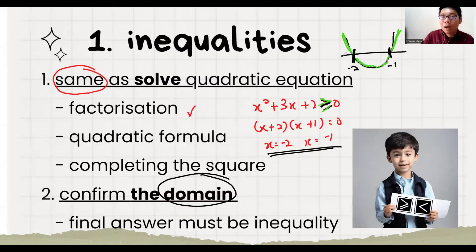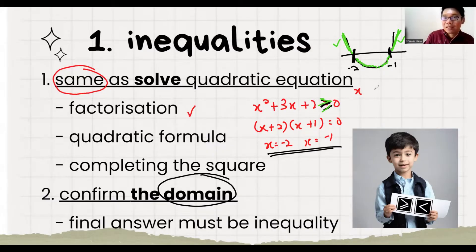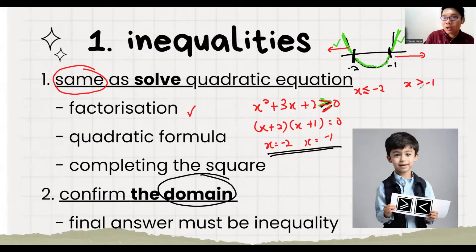When the question says more than, that means above the x-axis, which is the left region and the right region. So for the final answer, you clearly state: x goes to the left of minus 2, so x is less than or equal to minus 2 if the question has an equal sign. Then the next region: x is more than or equal to minus 1. This is how we do inequalities — just add the last step to identify which direction to go.